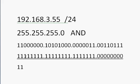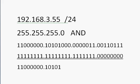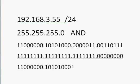Going through each octet: in the first two octets the ANDing gives us 192.168. In the third octet the same logic applies and we get 3. So far we have 192.168.3 in decimal form.